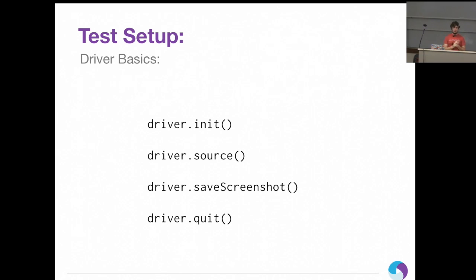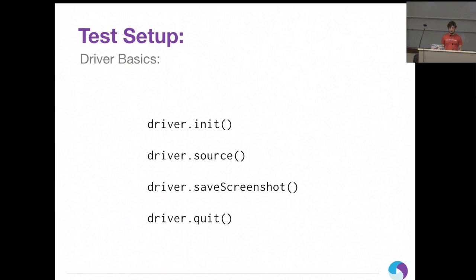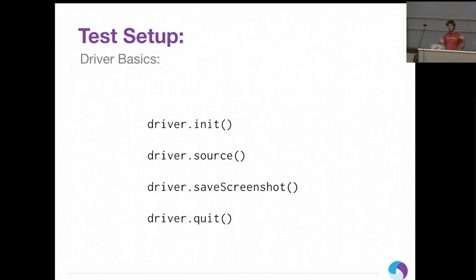Driver.source is super important — it's the main way to quickly test whether your automation is working. It returns the source code of the current view on the device. In Selenium, source returns the page source HTML. On Appium, if you're in a web view context you'll get the HTML. If you're in a native app context, source returns an XML string of the current view hierarchy. On iOS it only shows what's currently visible on screen; on Android it shows everything that exists on the view, whether or not it's visible.